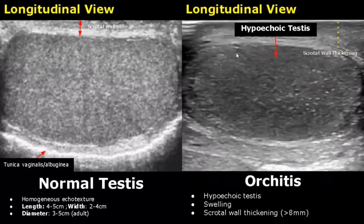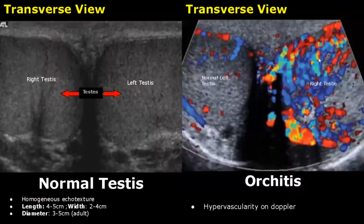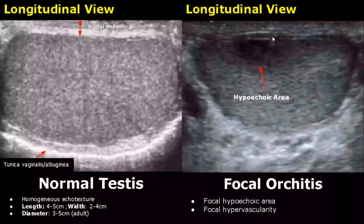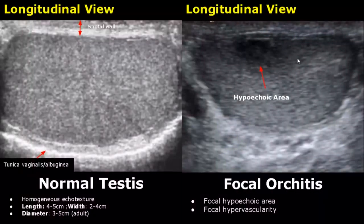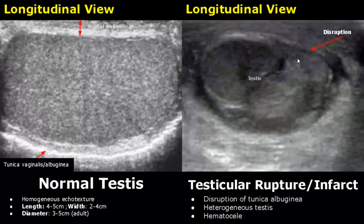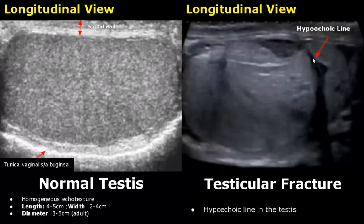Orchitis is the inflammation of the testis. The testis will be hypoechoic and swollen, and scrotal wall thickening will also be seen. On color Doppler, hypervascularity will be seen in the inflamed testis. Focal orchitis can also occur, appearing as a focal hypoechoic and hypervascular area. In testicular ruptures and infarcts there is disruption of the tunica albuginea. The testis appears heterogeneous and a hematocele can also be seen. Testicular fracture is due to trauma — a hypoechoic line passing through the testis indicates a portion has been separated; this hypoechoic line is blood.